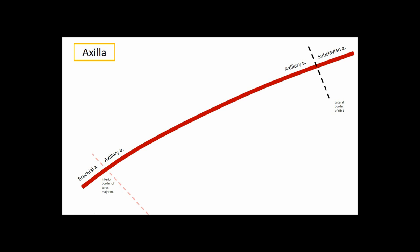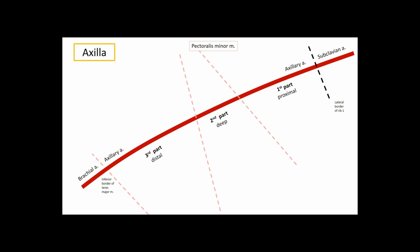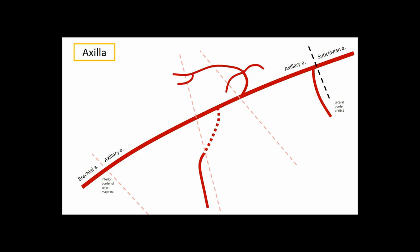The branches of the axillary artery are best learned in relation to the pectoralis minor muscle. The axillary artery can be divided into three parts relative to this muscle: the first part proximal, the second part deep, and the third part distal. So let's remove the pectoralis minor and learn the branches. There are two branches in the first part, one in the second part, and three in the third part.